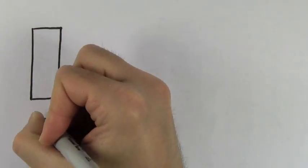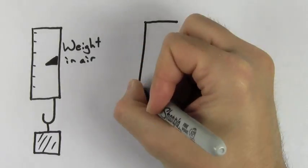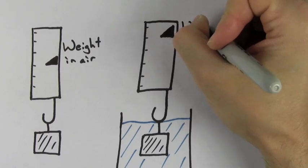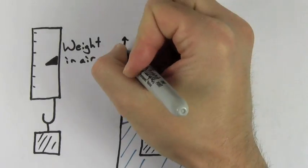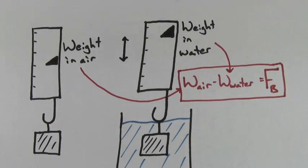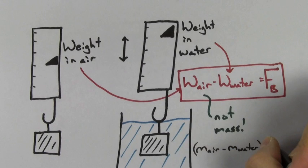Another way to find the buoyant force is by taking the difference between the weight of the object when measured in air and the weight of the object when measured in water. The difference in these weights will equal the buoyant force. Notice that we're talking about weight, not mass. If you took the difference between the mass of the object in air and the apparent mass when measured in water, you'd have to multiply by g to get the buoyant force.